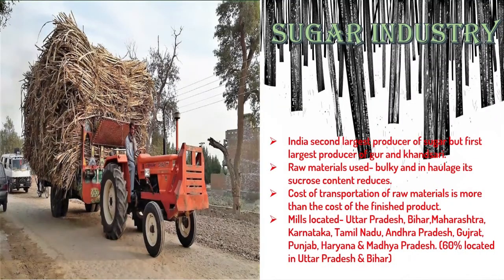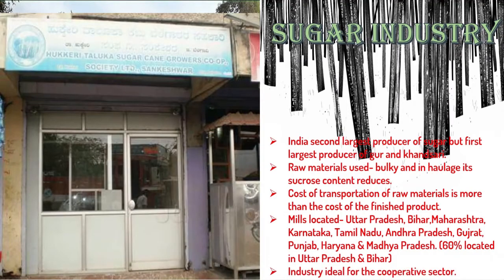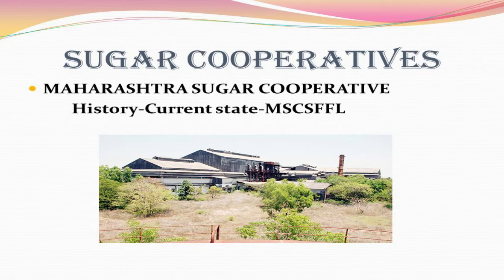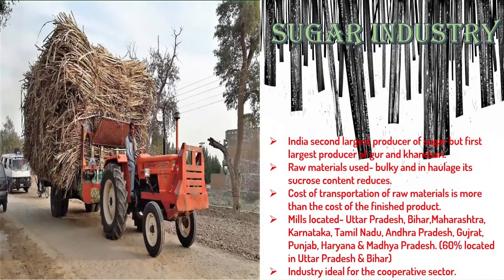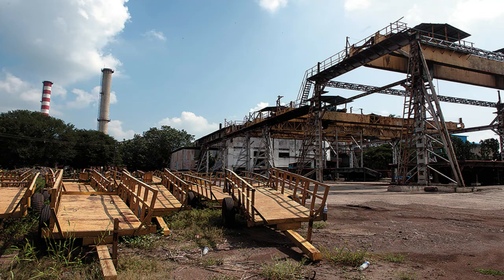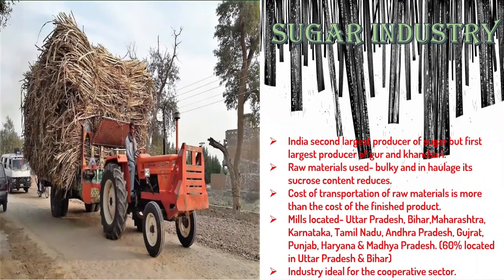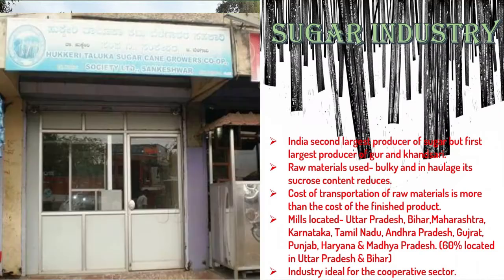This industry is ideal for the cooperative sector, where industries are owned and managed by a group of people — generally the producers of the raw materials. The sugar industry is seasonal in nature; sugarcane is an annual crop, and when it is reaped, farmers pool their resources, set up mills within sugarcane producing areas, and produce sugar. Cooperatives allow farmers to share profits and losses.